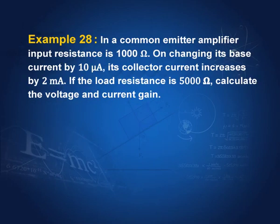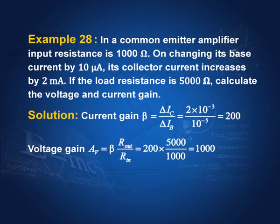In a common emitter amplifier, input resistance is 1000 ohms. On changing its base current by 10 micro amperes, its collector current is increased by 2 milli amperes. If the load resistance is 5000 ohms, calculate the voltage and current gain. Current gain is delta I_C by delta I_B, which is 2 milli amperes by 10 micro amperes, and this is 200. As expected, beta is very high. Voltage gain is current gain times the ratio of output to input resistance: 200 into 5000 by 1000, which is 200 into 5, giving a voltage gain of 1000.